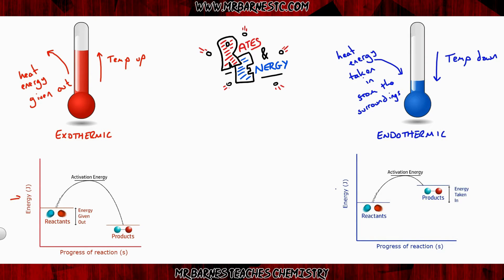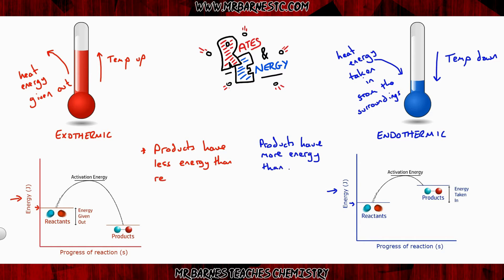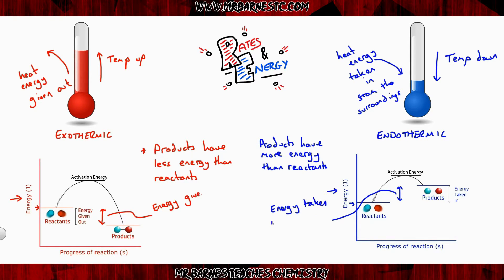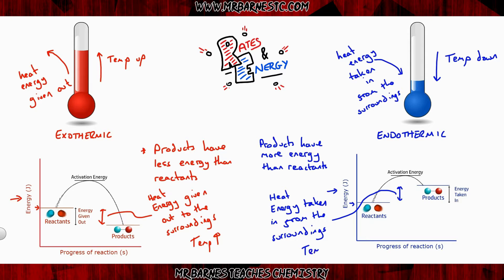You can show exothermic and endothermic reactions using reaction profiles, which show the energy of the reactants and products as the reaction progresses. For exothermic reactions, the products have less energy than the reactants, and that energy difference is given out to the surroundings, which is why the surroundings heat up. For endothermic reactions, the products have more energy than the reactants, and that energy is taken in from the surroundings, which is why the temperature goes down.